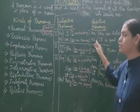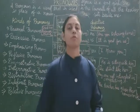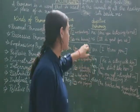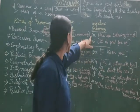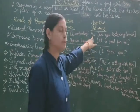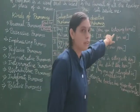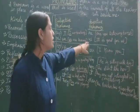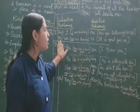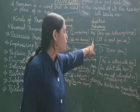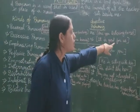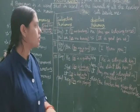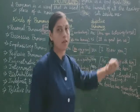Next is objective pronoun. Jo pronoun hum object ke liye use karte hai, uske baare mein janenge. First person singular objective pronoun is 'me' — for example, 'Are you listening to me?', where me is the object. First person plural objective pronoun is 'us' — for example, 'It is good for us', where us is at the object place, so it is an objective pronoun.